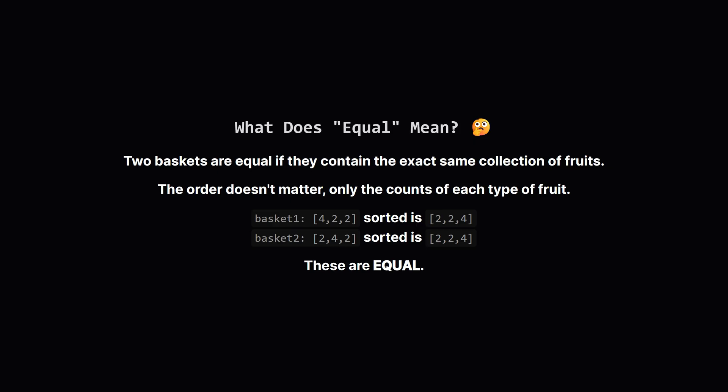So what does it mean for two baskets to be equal? It doesn't mean the lists have to be identical in their current order. It means that if you were to sort both baskets, they would become exactly the same. In other words, they need to have the same number of each type of fruit. For example, if one basket has two apples and a banana, the other must also end up with two apples and a banana.